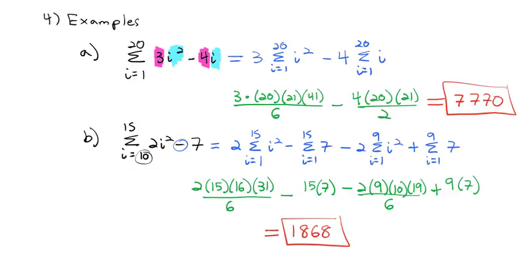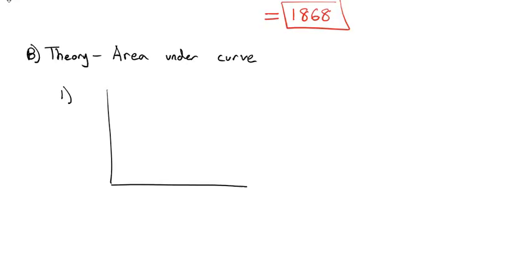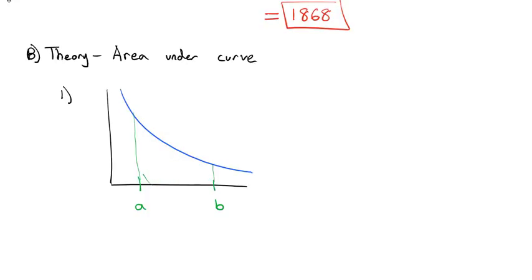But sigma notation isn't the main question we're trying to answer. The real question is: how do we find the area under a curve? Let's look at the theory first and then practical applications. We'll draw a graph that curves down and find the area from A to B. Since it's not a straight line, we're going to cheat — we'll put little rectangles under the curve, because rectangles are very easy to find the area of.